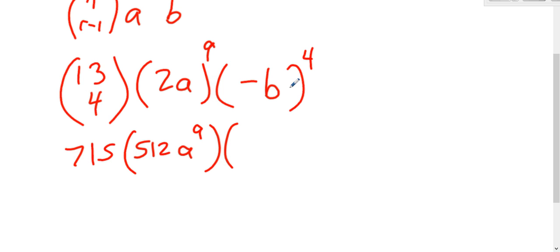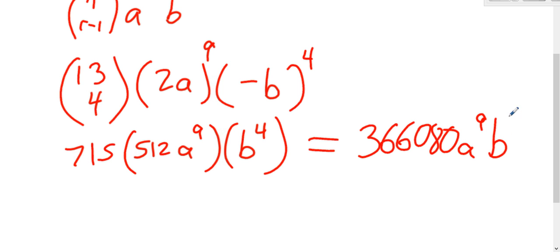Negative b to the 4th. So since it's a negative with an even power, it turns positive. It's just b to the 4th. So if you had a calculator, you would multiply 715 times 512, if you even knew what those numbers were. And then you would have a to the 9th, b to the 4th.